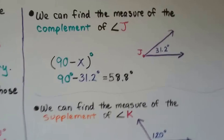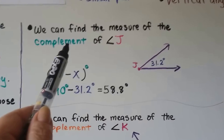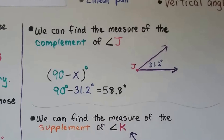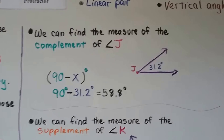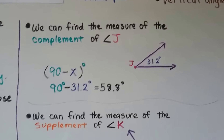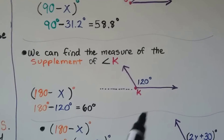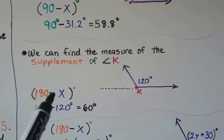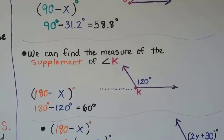To find the complement of angle J: angle J is 31.2 degrees, so we do 90 minus 31.2. The complement is 58.8 degrees. To find the supplement of angle K: angle K is 120 degrees, so we do 180 minus 120 degrees, and the supplement is 60 degrees.